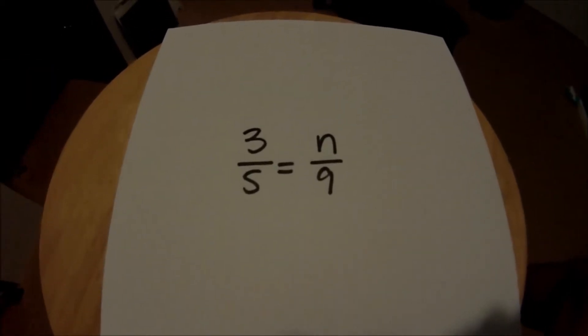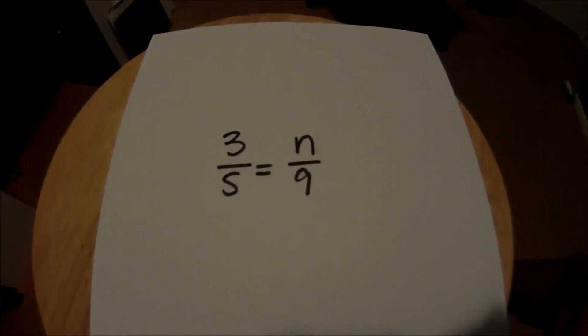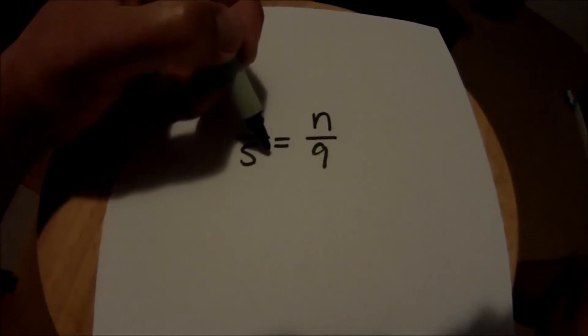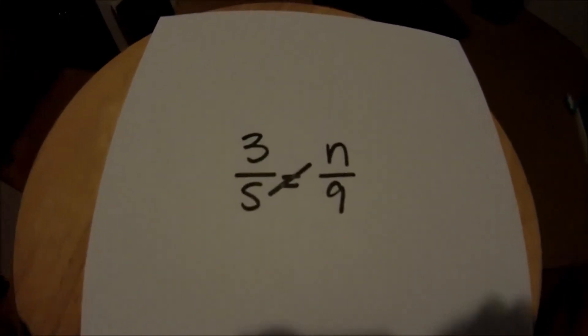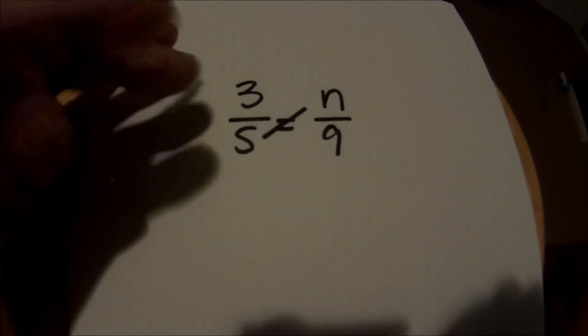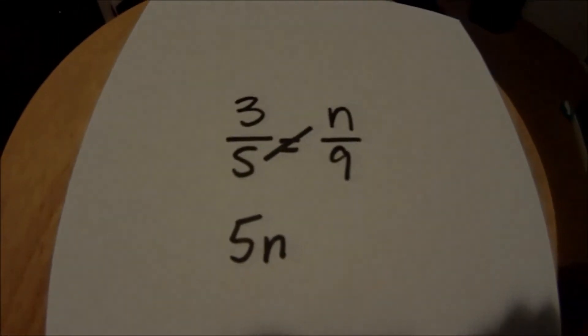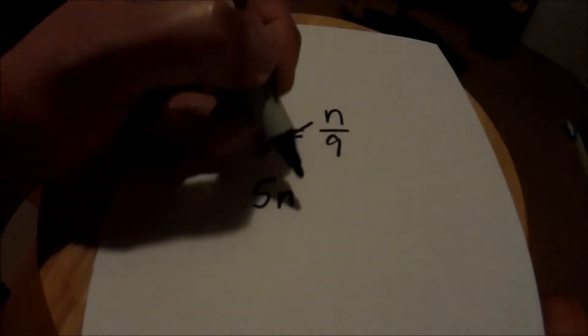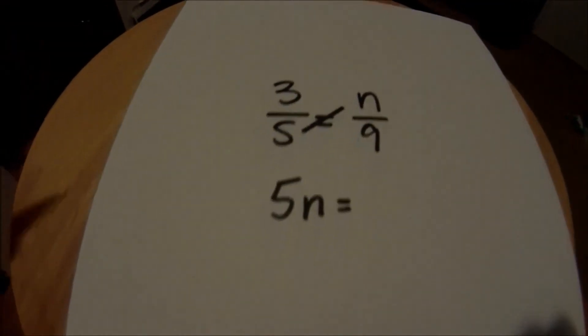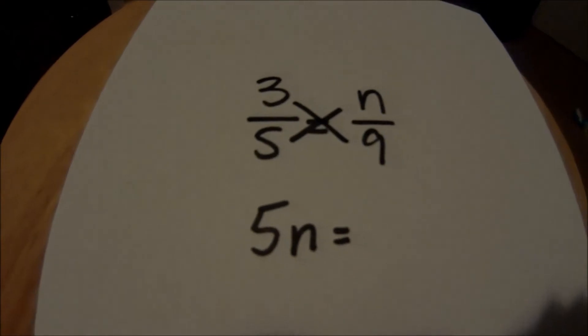In the other video we said we're going to do the algebraic method which was to cross multiply. So I'm going to cross multiply here and go 5 times n and we'll get 5n, and then we'll multiply 3 times 9 and we'll get 27.